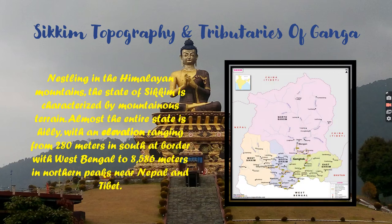Next, we are going to talk about Sikkim — topography and tributaries of Ganga. Nestled in the Himalayan mountains, the state of Sikkim is characterized by mountainous terrain. Almost the entire state is hilly, with an elevation ranging from 280 meters in the south at the border with West Bengal to 8,586 meters at the northern peaks near Nepal.